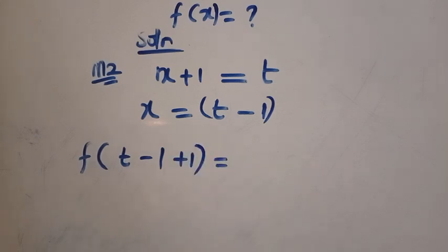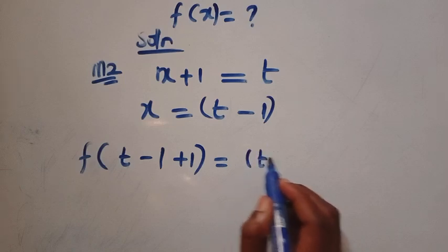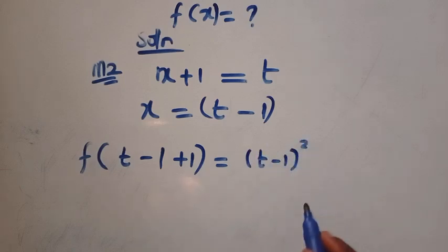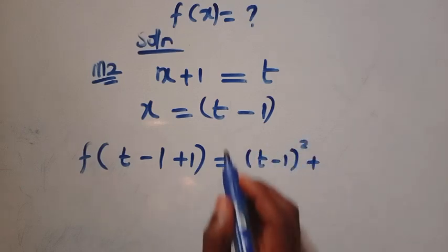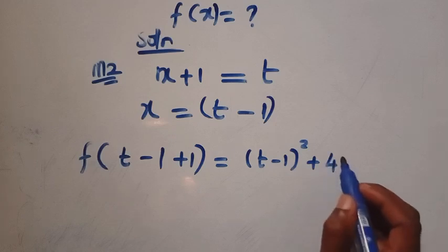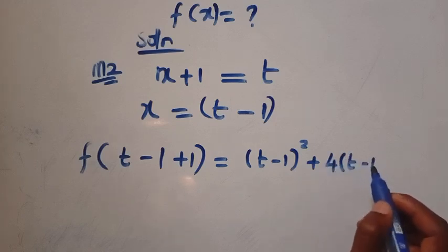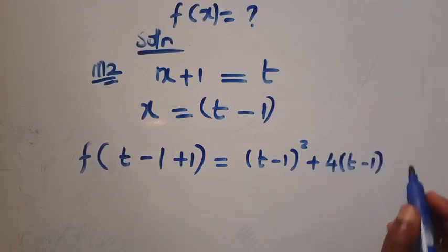we are going to have f of x now is given as t minus 1, then plus 1, equals for x squared, that one gives us t minus 1 squared, plus for 4x, that gives us 4 into bracket of t minus 1, then plus 6.